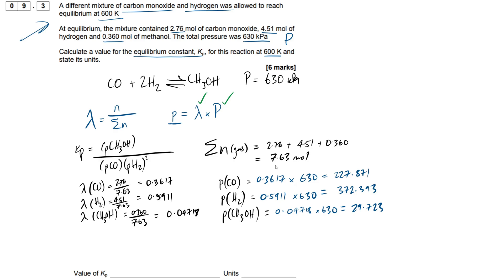Okay, so what do you think we do next? All we have to do is just put these values into our KP expression. So what I'm going to do - we're running out of space, aren't we? KP equals I'm going to have a partial pressure of methanol, which is simply 29.723, chuck that in brackets, over our partial pressure of carbon monoxide, so that'll be 227.871, and then also our hydrogen gas, 372.393. Remember, very important, we have to square it, right? Perfect. So that gives us a total answer of 9.41 times 10 to the minus 7. So remember, we can put that in our box right here. You can chuck that in our answer box: 9.41 times 10 to the minus 7.